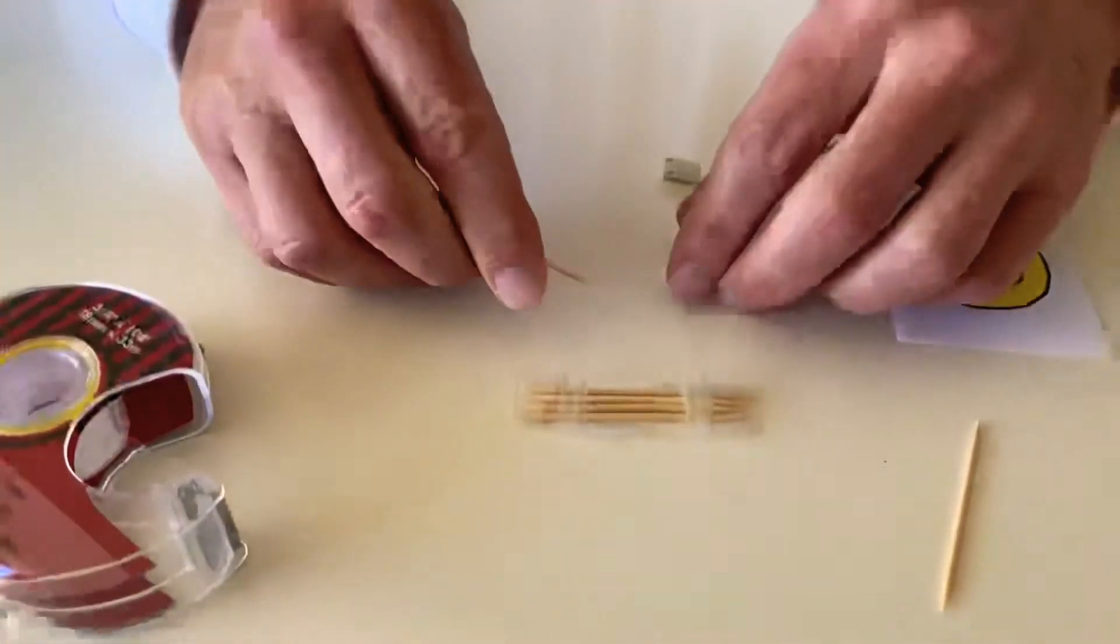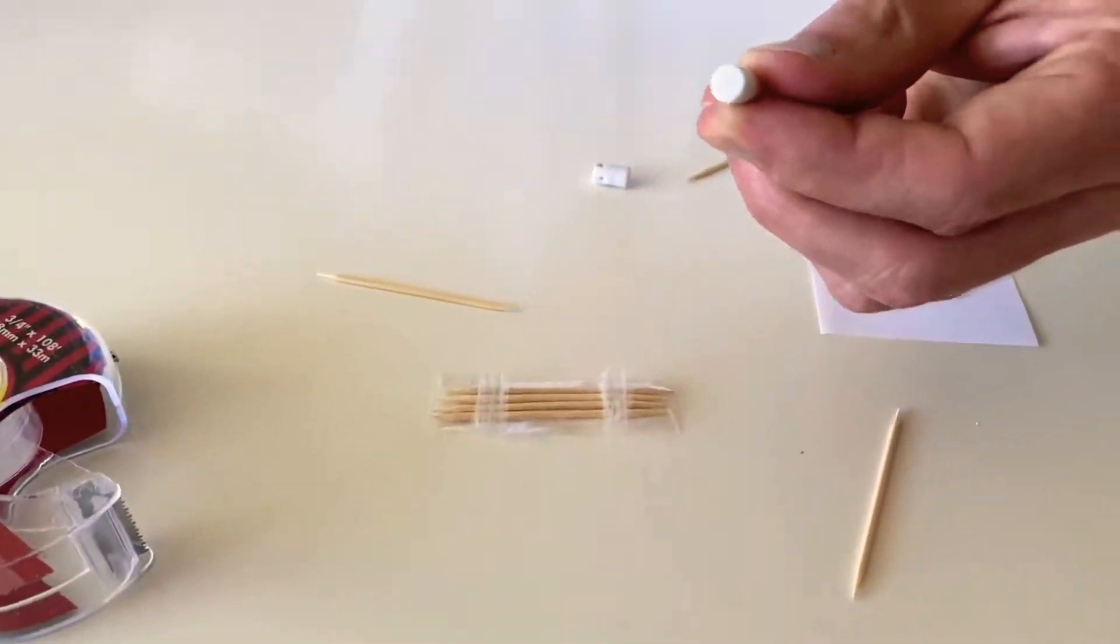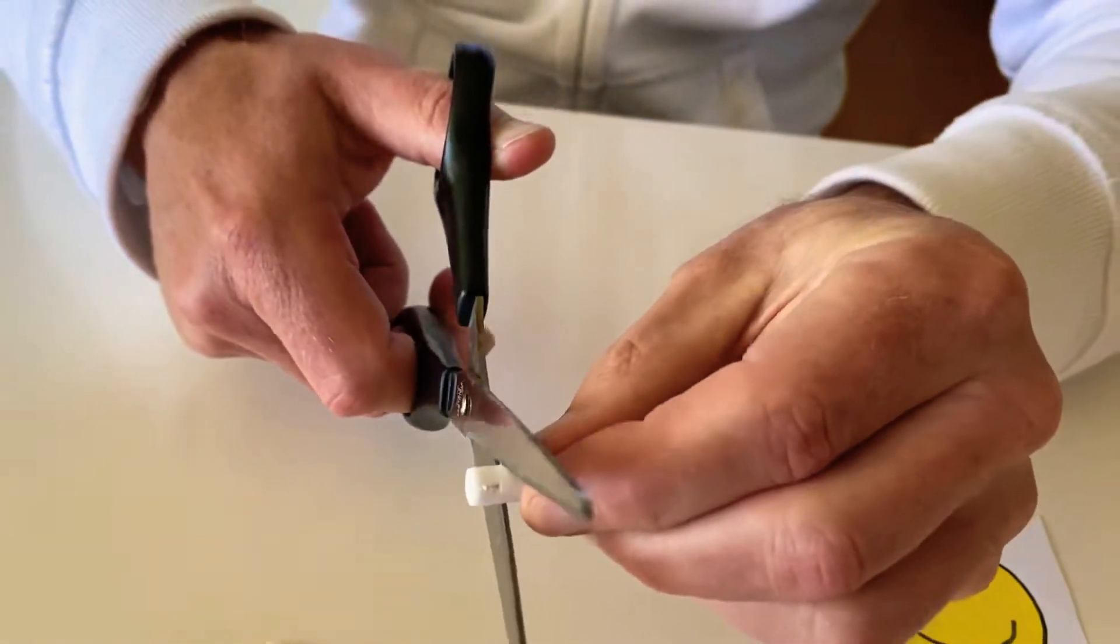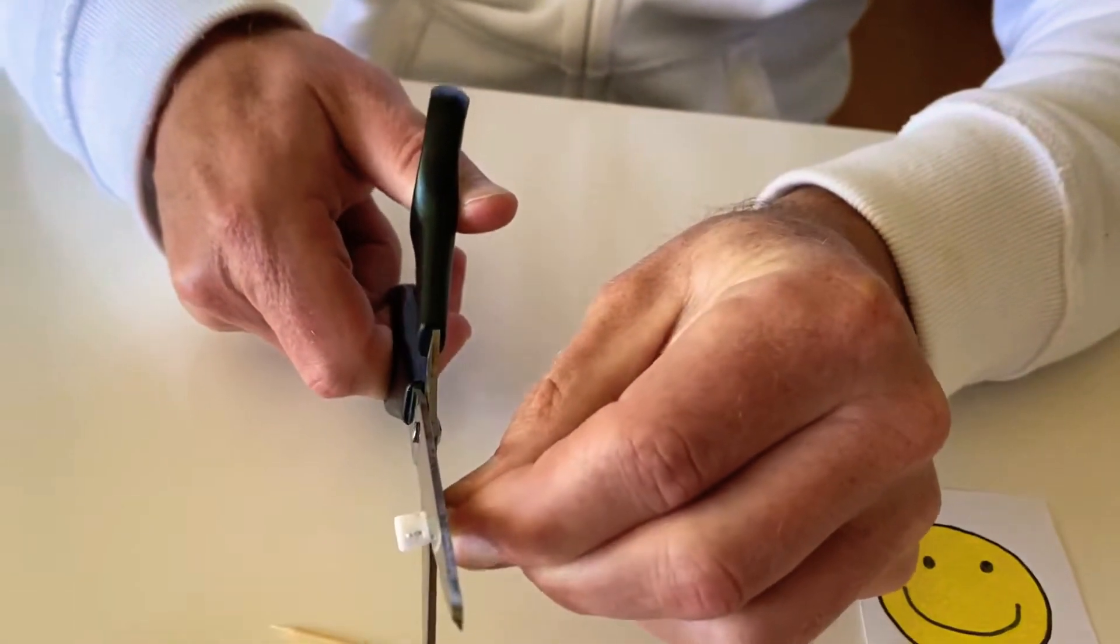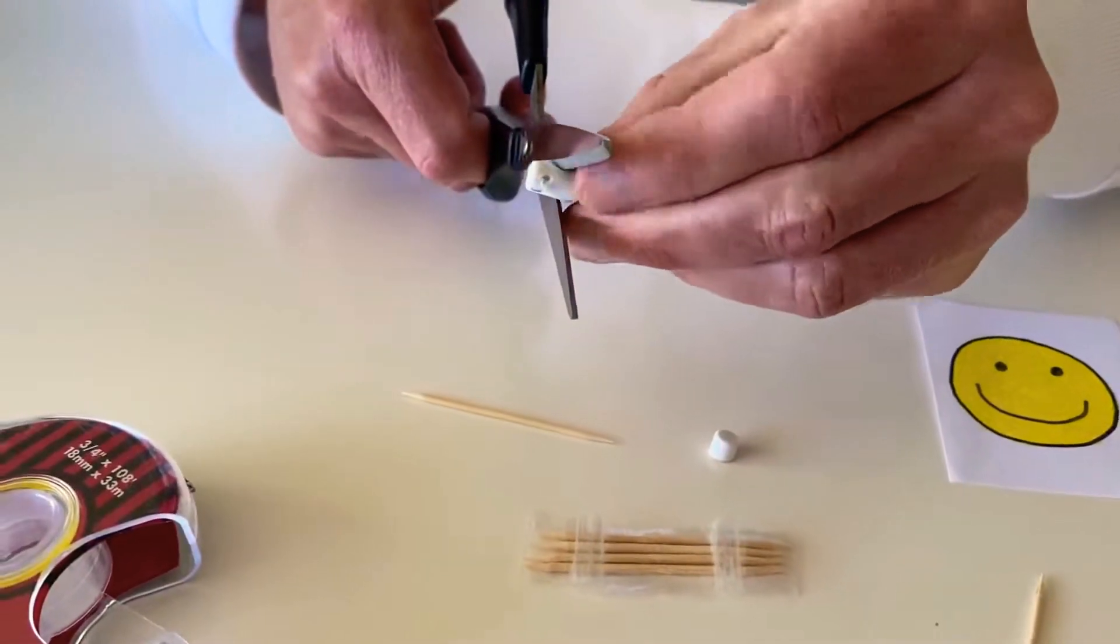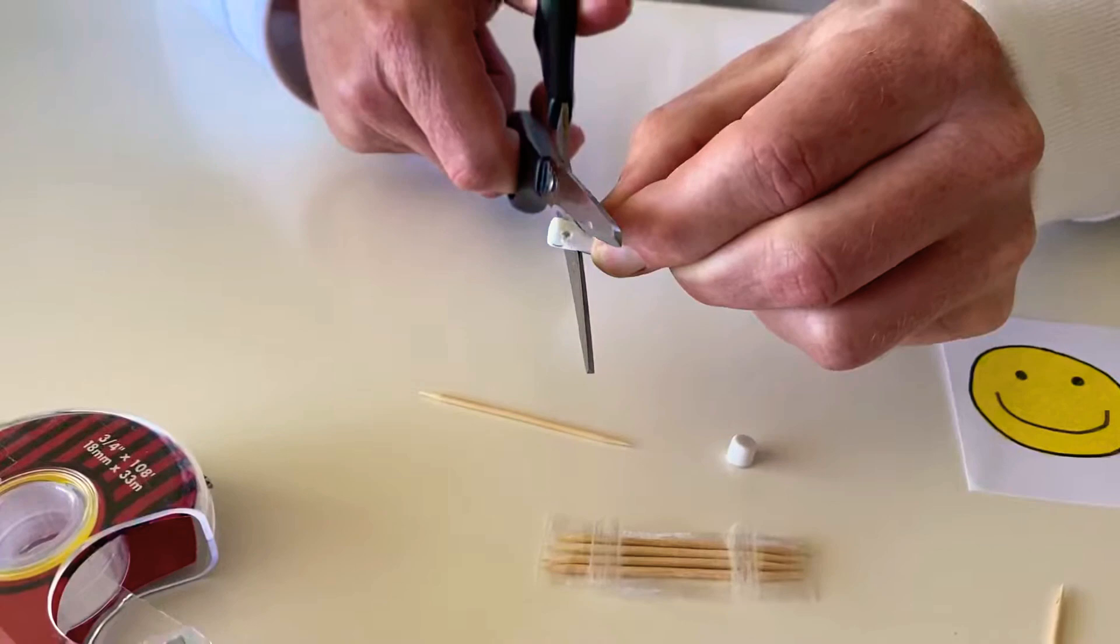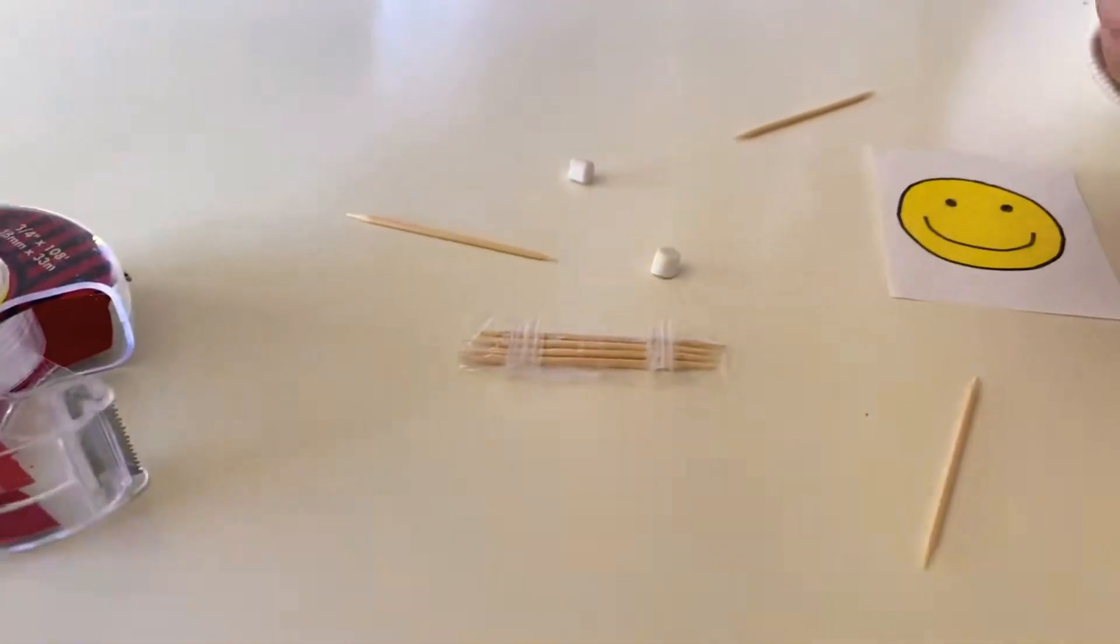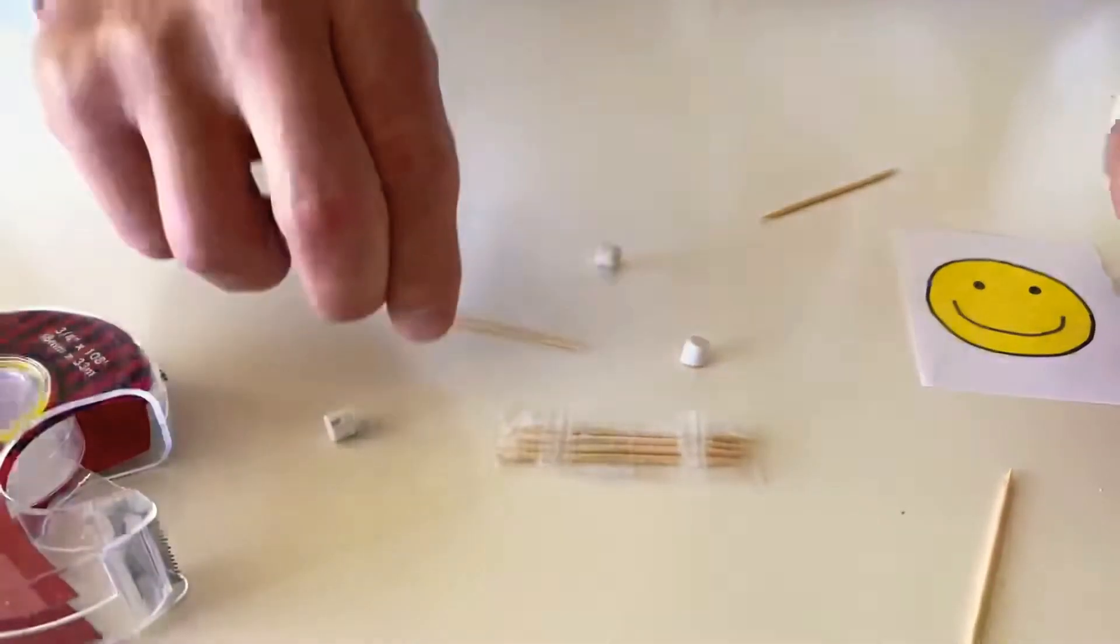Now the next part, I have to take these erasers and cut them in half. You might want an adult to check on this if you're worried about cutting your fingers. Move your fingers out of the way, cut down. I bring all my wheels together.